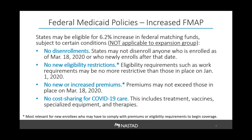If a state intends to seek the federal match, they must comply with four requirements. First, they cannot disenroll anyone who's enrolled as of March 18th or anyone who enrolls after that date. This is especially important in states with policies like work requirements and premiums that can result in disenrollment for failure to comply. This also applies to anyone receiving Medicaid benefits pending an appeal — even if the appeal is denied, they can't be disenrolled.